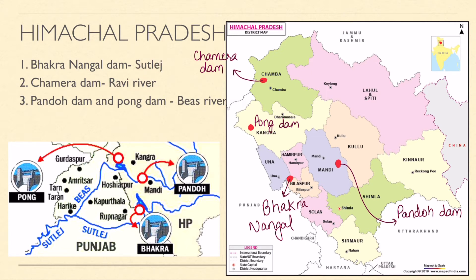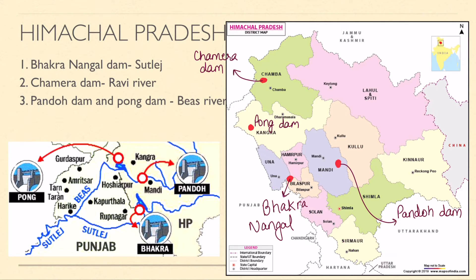Let's look at the location on the map. Himachal Pradesh map - near the Punjab border, close to Bilaspur district, is Bhakra Nangal Dam. If you try to remember it from the map it becomes very easy. Next is Chamera Dam, in Chamba district - from Chamba, Chamera is easy to remember.